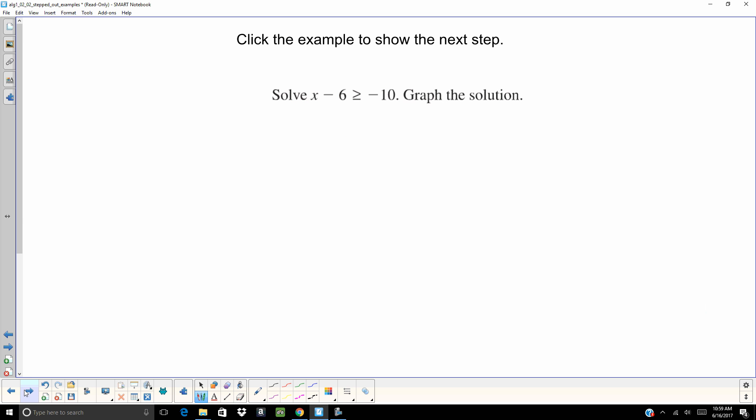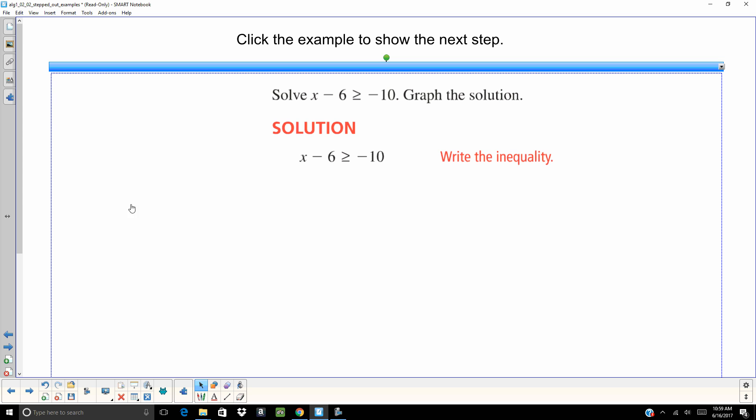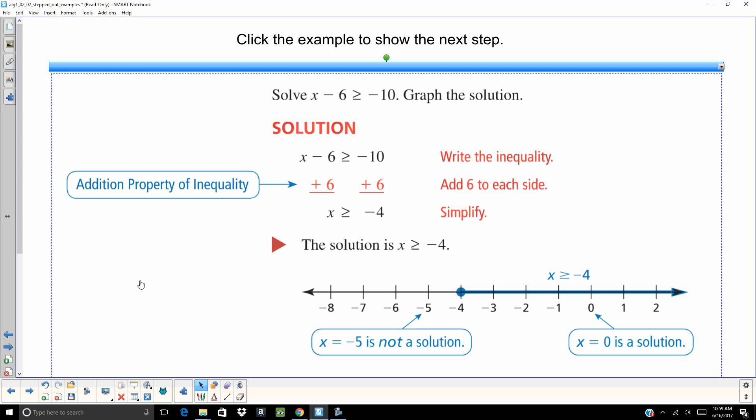So on this one we want to solve, you write the initial inequality down. I ask myself what can I do to get rid of that minus 6? Add 6. x is greater than or equal to negative 4. If I were going to graph it, it would be shaded to the right with a closed dot.